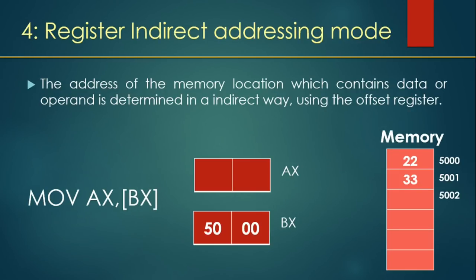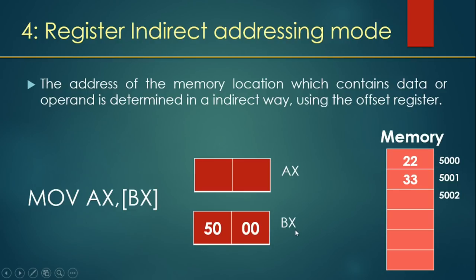Next is register indirect addressing mode. In this mode, the memory location containing the data or operand is determined indirectly using an offset register. You want to copy data from a memory location, but the address is not given directly in the instruction — it is kept in a different register. In the example MOV AX, [BX], BX is holding a memory address. BX points to address 5000 which has 22, and 5001 has 33. After execution, the data 22 and 33 from locations 5000 and 5001 will be copied to the AX register.